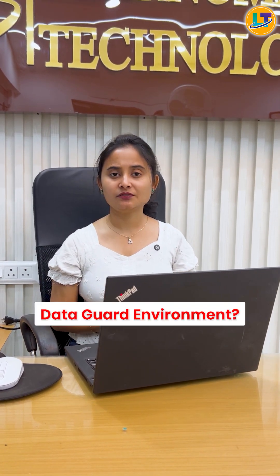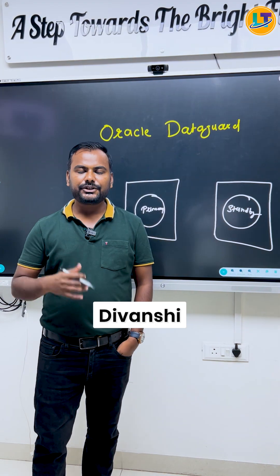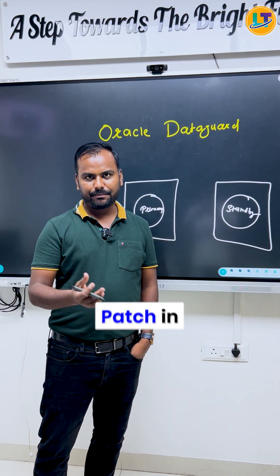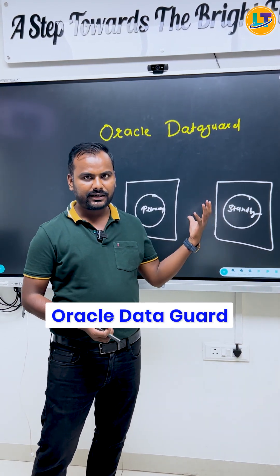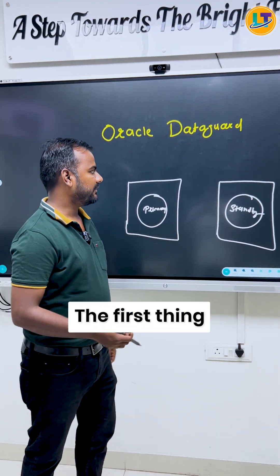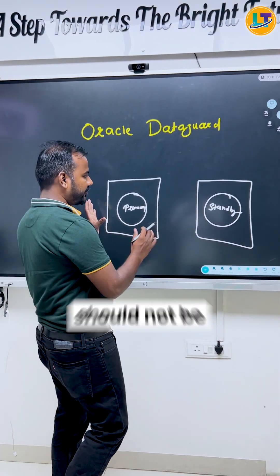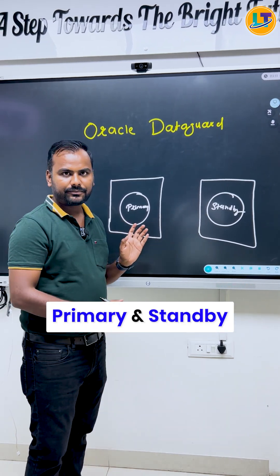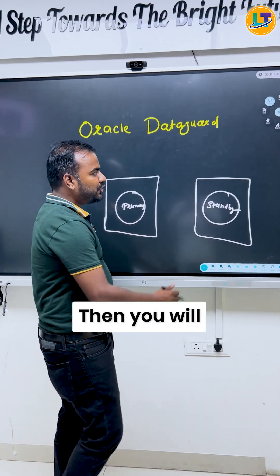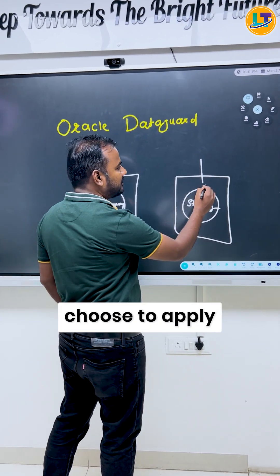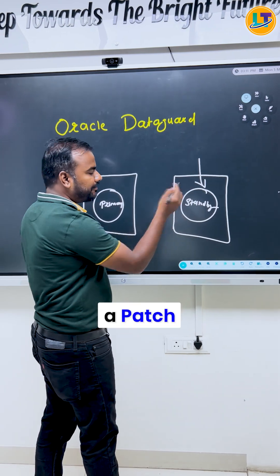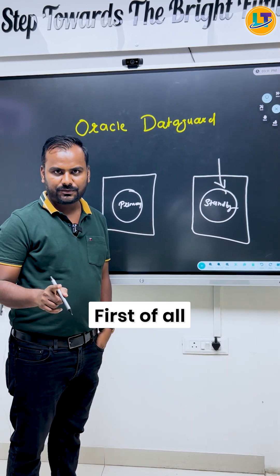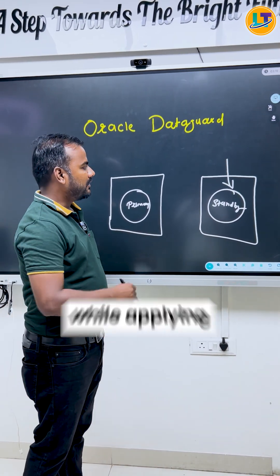Ankur sir, can you please explain the steps to apply a patch in a Data Guard environment? When you want to apply a patch in an Oracle Data Guard environment, the first thing is there should not be any gap between primary and standby. Then you will choose to apply the patch on the standby first.